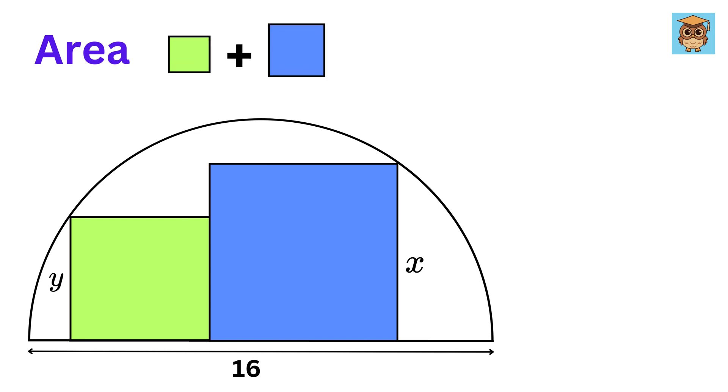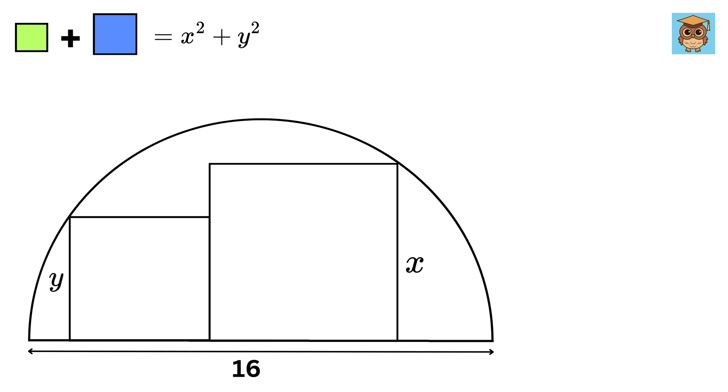It's simple, right? It will be x squared plus y squared. Now, since we don't know the exact position of the squares, let us put the center of this semicircle somewhere here, and let us call this distance as K.